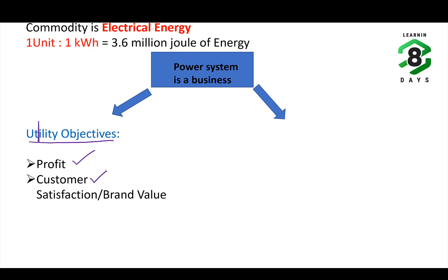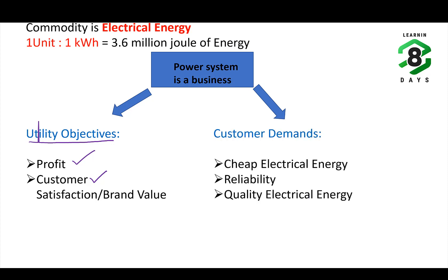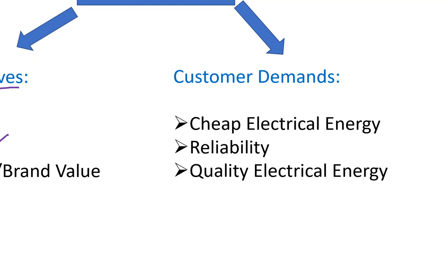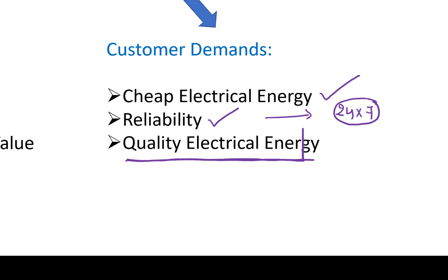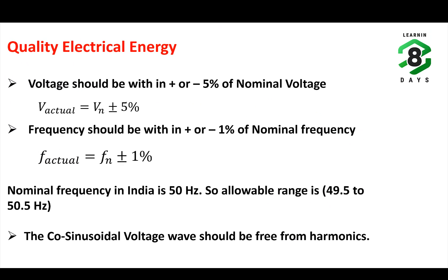From the customer's perspective, there are three main demands in this business. First, the customer wants cheap electrical energy — that is, energy at cheaper unit prices. Second, reliability: 24/7 electrical supply should be available for consumption. Third, quality electrical energy. These are the three demands of the customer: cheap energy, reliable 24/7 supply, and quality electrical energy.